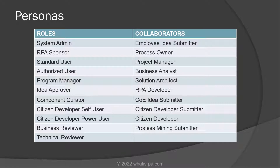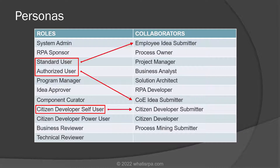As we'll see shortly in the Automation Hub demos, there are a variety of roles and collaborators that interact on any given idea. Automation Hub is pretty sophisticated, so the list of roles and collaborators can be a little bit intimidating. Depending upon how large your company is, you can possibly omit some of these roles and only focus on the most important ones. Some of the more important roles are the standard user and the authorized user, both of which can submit ideas. The citizen developer self user can also submit ideas, so those are the submitters for the three lanes described earlier.